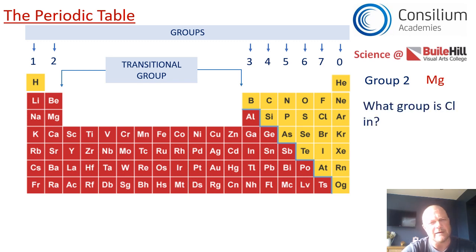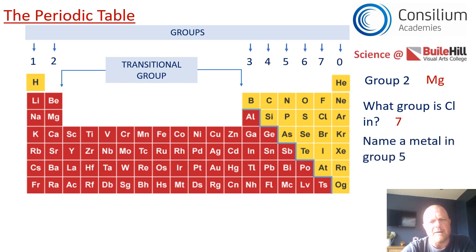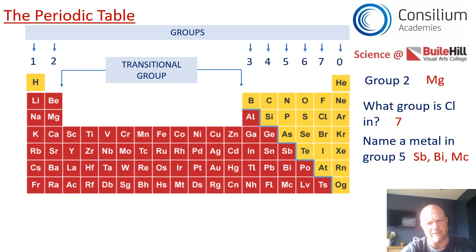If the question asked what group Cl is in — well, Cl is a non-metal, so it's to the right hand side of the periodic table. It's in group seven, second one down. And if I was to ask you to name a metal in group five, you'd have to find group five first. Three possible answers are Sb, Bi, and Mc. It can't be N, P, or As, because those three are non-metals.